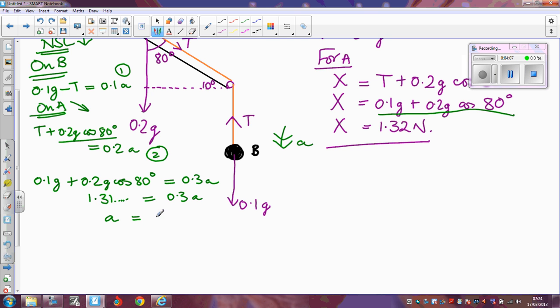A comes out as 4.4011 metres per second per second, and I can then go back to, it doesn't really matter, probably this first equation, so I know that if I rearrange that, T is going to equal 0.1g minus 0.1a.